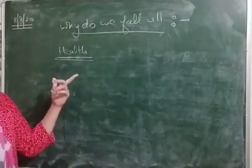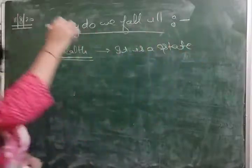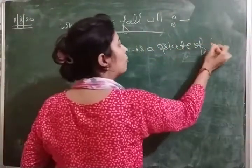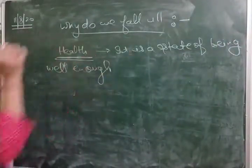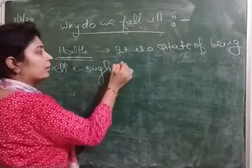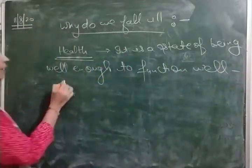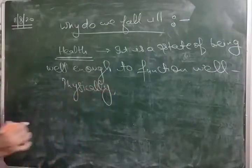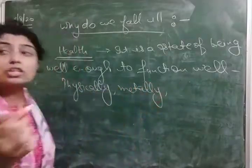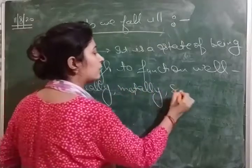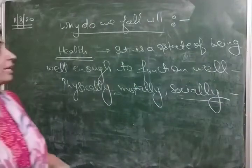So what do you mean by health? Health is a state — a state of being well enough to function well. And how do we do that? Physically would be proper functioning, mentally would be properly functioning, and socially would be properly functioning. So these three components form the definition of health.